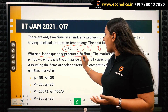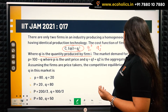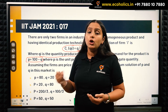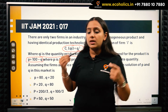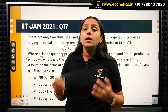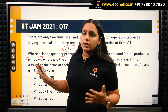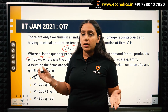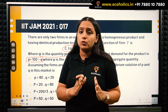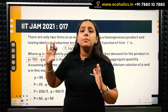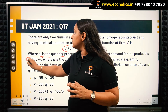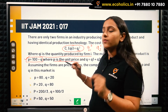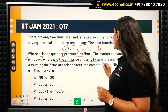The market demand for the product is P = 100 − Q. In equilibrium, every firm produces to match the market demand. This is the demand function of the market, where P is the unit price of every good these two firms are producing, and Q is q1 plus q2.